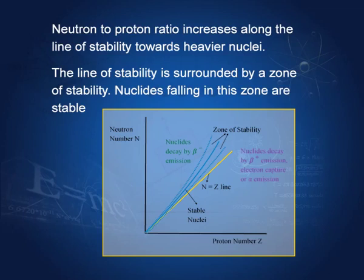We have plotted here the neutron number N and proton number Z. The thick blue line is the line of stability — nuclei lying on that line are stable nuclei. Around that line there is a zone of stability. All nuclei existing within this zone, bounded by the dotted lines, are stable nuclei. Outside this zone, nuclei are unstable.